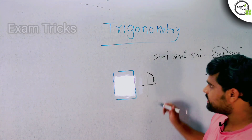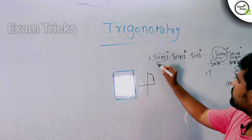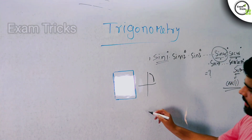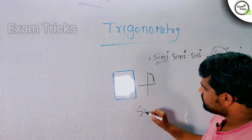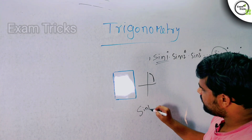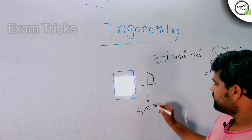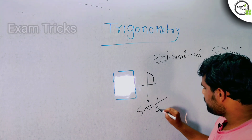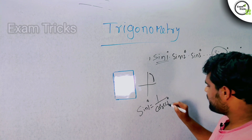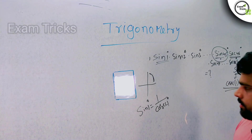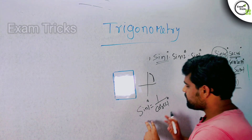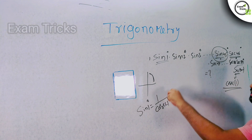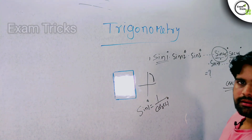So sin1° = 1/cosec1°, because cosec is the reciprocal of sine. Sin1° equals 1 divided by cosec1°. Cosecant is the reverse of sine.